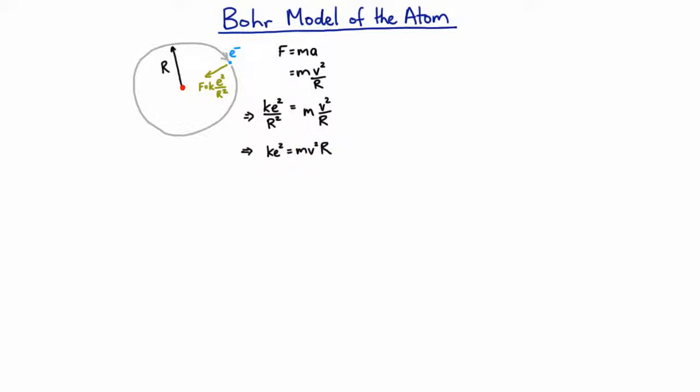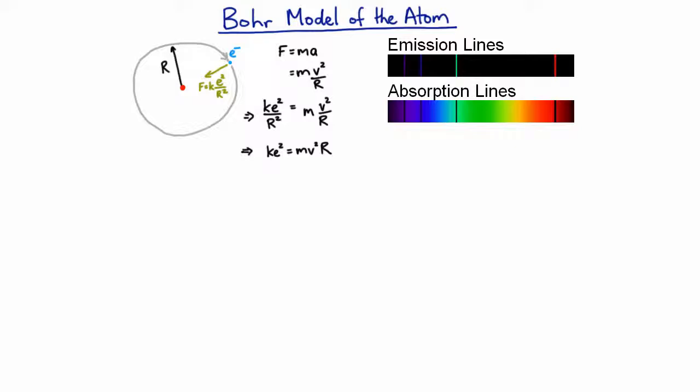But Bohr knew that since the light being absorbed or emitted by this atom had to come at very specific frequencies, then it also had to have very specific energies, because of the relationship between the photon's energy and its frequency. And that energy had to come from the atom itself. So when the photon was coming away from the atom with a certain amount of energy, the atom had to have changed by that amount of energy.